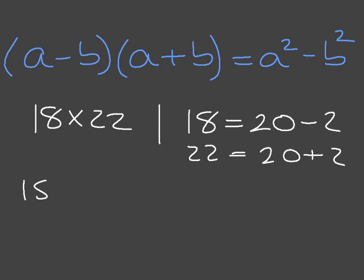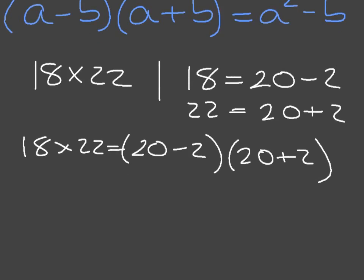Then I can say that 18 times 22 is equal to 20 minus 2 times 20 plus 2. Now, using the fact that a minus b times a plus b equals a squared minus b squared, I can write this: 20 minus 2 times 20 plus 2 equals 20 squared minus 2 squared.